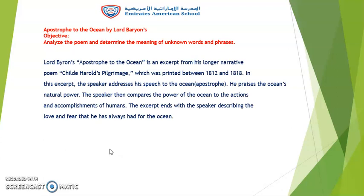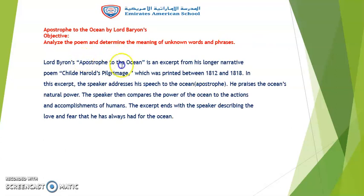In order to start, Lord Byron's Apostrophe to the Ocean is a selection from his longer narrative poem, Childe Harold's Pilgrimage, which was printed between 1812 and 1818. The meaning of Apostrophe to the Ocean is that the poet himself is addressing or talking to the Ocean as if it were a living person.